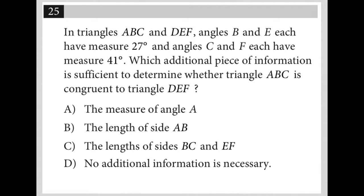This question says in triangles ABC and DEF, angles B and E each have measure 27 degrees and C and F each have measure 41 degrees. So that should mean they're basically saying these two triangles are similar triangles.